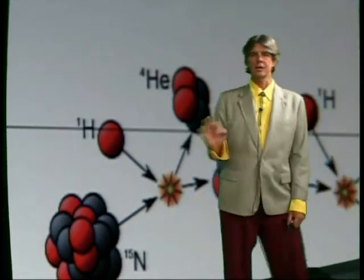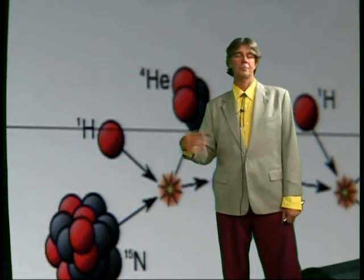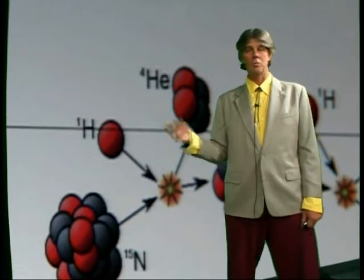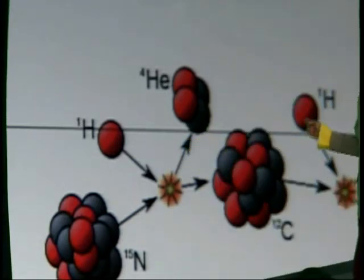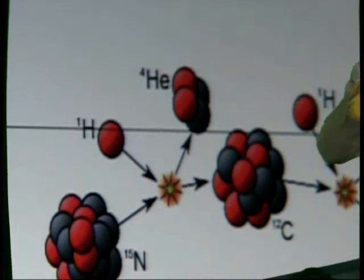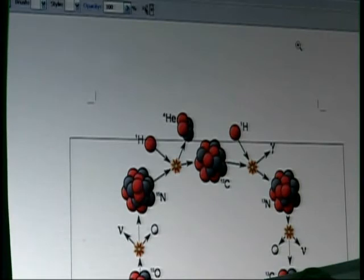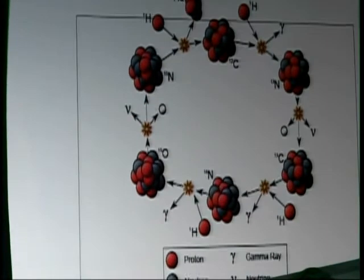So this is called a catalyst, because it remains, it ends up, and the net reaction is being unchanged. So this carbon can go on and take another hydrogen proton in, start the whole cycle over again. So I have a theory that there was carbon around when the helium and hydrogen was fused at the Big Bang.